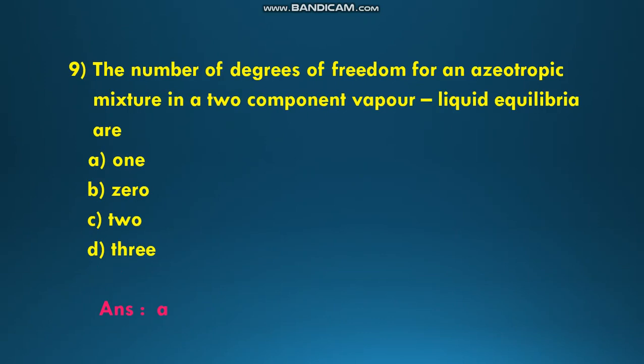The next question: the number of degrees of freedom for an azeotropic mixture in a two-component vapor-liquid equilibrium. The options are A: 1, B: 0, C: 2, D: 3. For an azeotropic mixture, the degrees of freedom F equals 1. The answer is A.